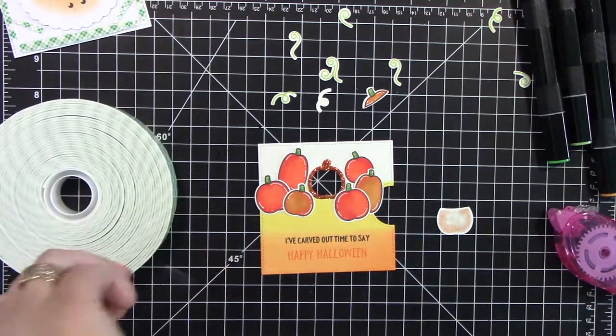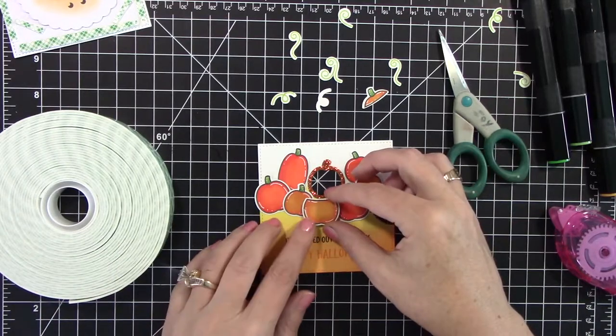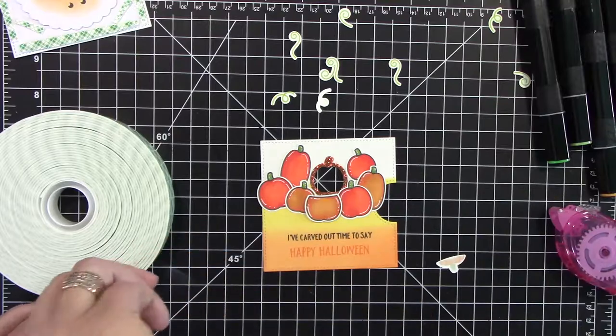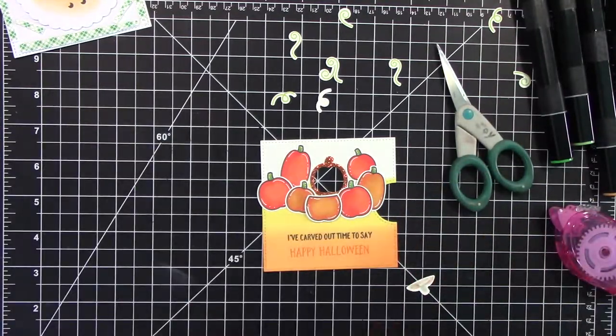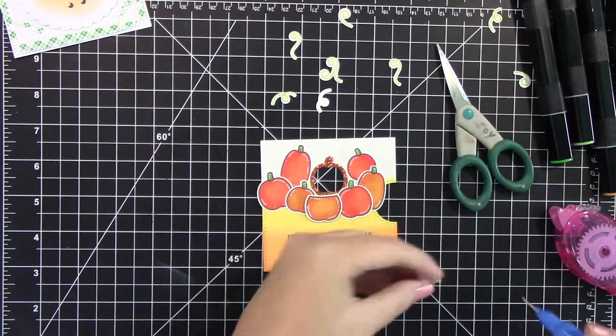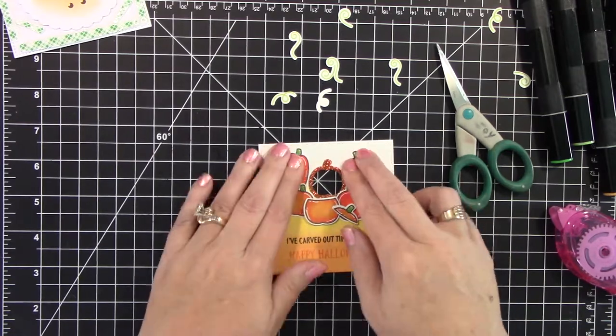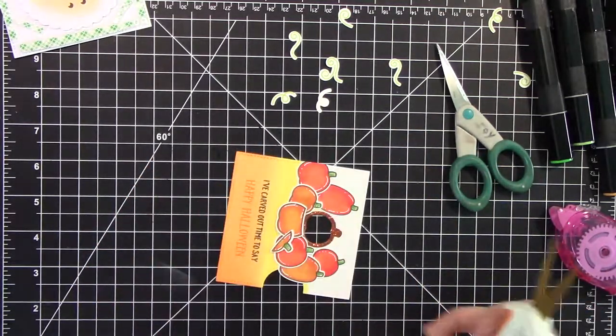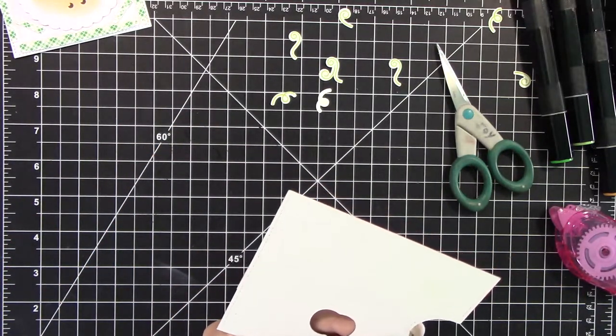And it's okay that I'm going off the edge. And I probably could have left them hanging off the edge. Well, except for the one pumpkin where the reveal wheel part is. But I did decide to trim those off, even though this will be on an A2-sized card base.